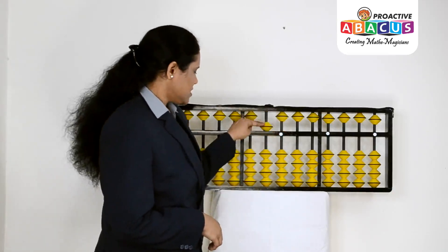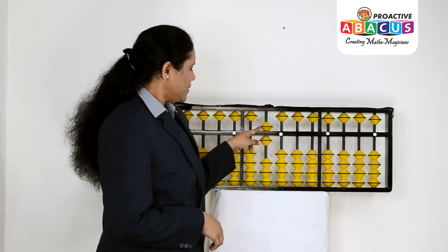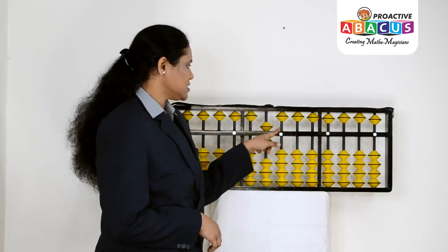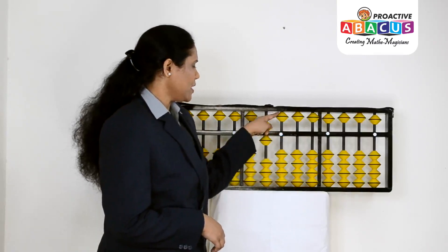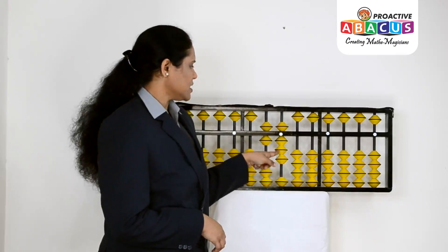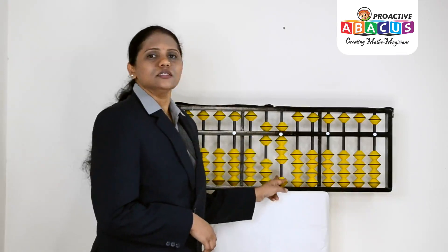Next, we show 68. 60: upper deck is 5, lower deck is 1 bead, that's 6, then 0. For unit place 8, we have upper deck 5 and lower deck 3: 5, 6, 7, 8. That's 68.